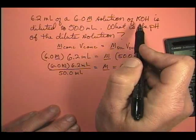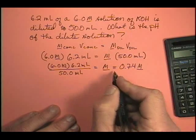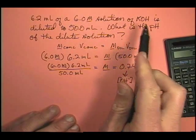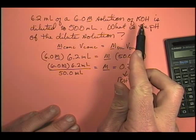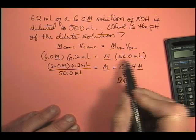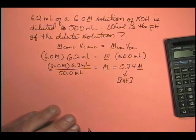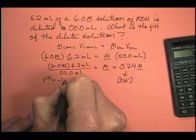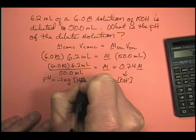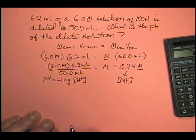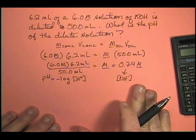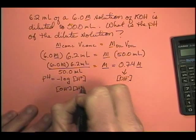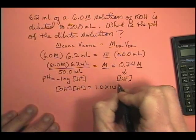This is a potassium hydroxide solution, so this concentration is also the same as the hydroxide ion concentration, because there is one mole of hydroxide for every mole of potassium hydroxide. So 0.74 molar is the concentration of potassium hydroxide and the concentration of the hydroxide ion. In order to figure out the pH — which equals the negative log of the hydrogen ion concentration — we need to know [H⁺]. Remember, the hydroxide ion concentration times the hydrogen ion concentration equals 1.0×10⁻¹⁴.